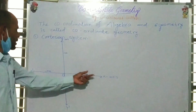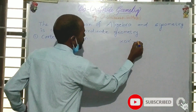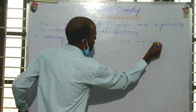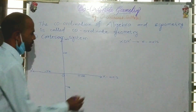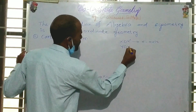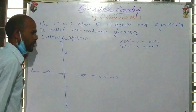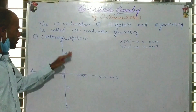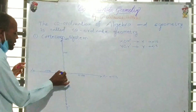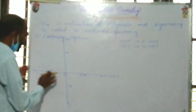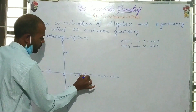So x-o-x-dash is called the x-axis — it is nothing but the horizontal line. And y-o-y-dash is called the y-axis. This x-y plane is the Cartesian system. On x-o-x-dash we represent values 1, 2, 3, 4, 5, 6, and so on.